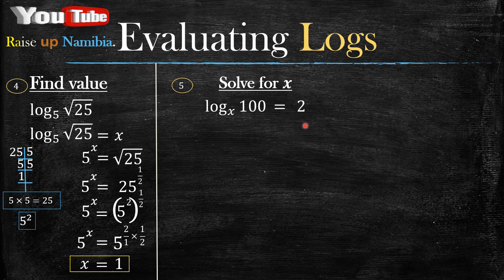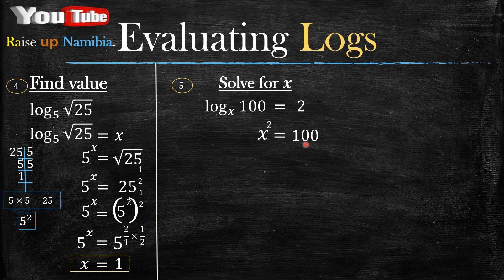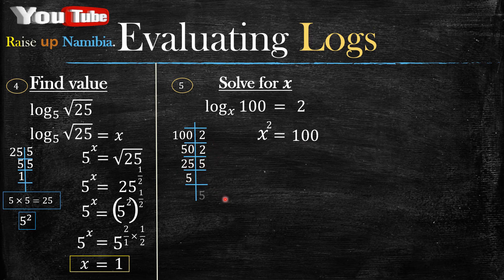Now how about when you're given log base x of 100 equals 2 and you're told to solve for x? Same concept — change it into exponential form. Now look at 100 and write it using its prime factors: 100 divided by 2 is 50, 50 divided by 2 is 25, 25 divided by 5 is 5, and 5 divided by 5 is 1.